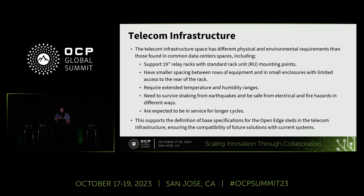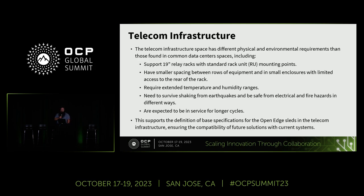The original infrastructure is constrained by physical and environmental requirements. This is built on what has traditionally been the NEBS specifications. As we move this into a more general computing environment and into constrained edge cases, it requires things that go beyond NEBS, which was designed for your traditional central office environment. The specification supports a 19-inch relay rack with standard rack unit mounting points, and it has smaller spacing between rows of equipment to address those small enclosures.